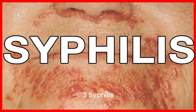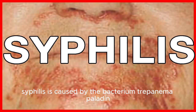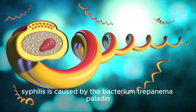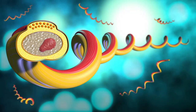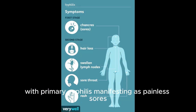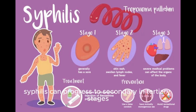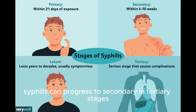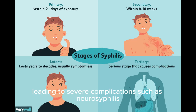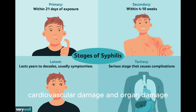3. Syphilis is caused by the bacterium Treponema pallidum. It progresses through stages, with primary syphilis manifesting as painless sores, called chancres, at the site of infection. If left untreated, syphilis can progress to secondary and tertiary stages, leading to severe complications such as neurosyphilis, cardiovascular damage, and organ damage.